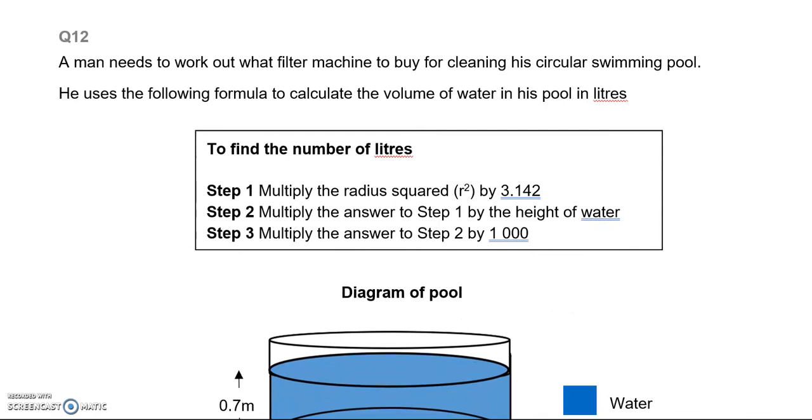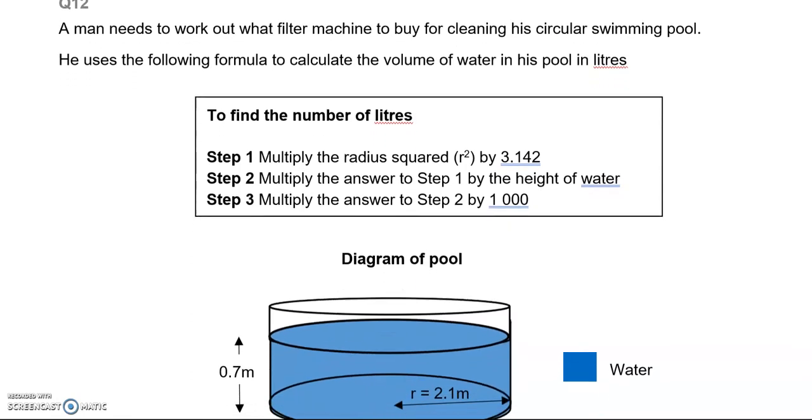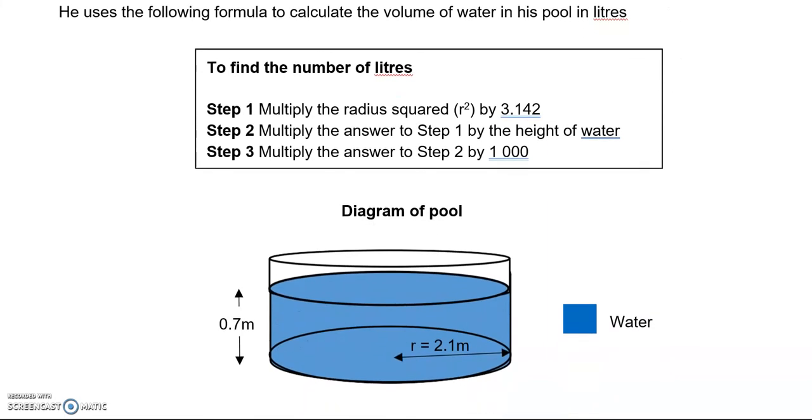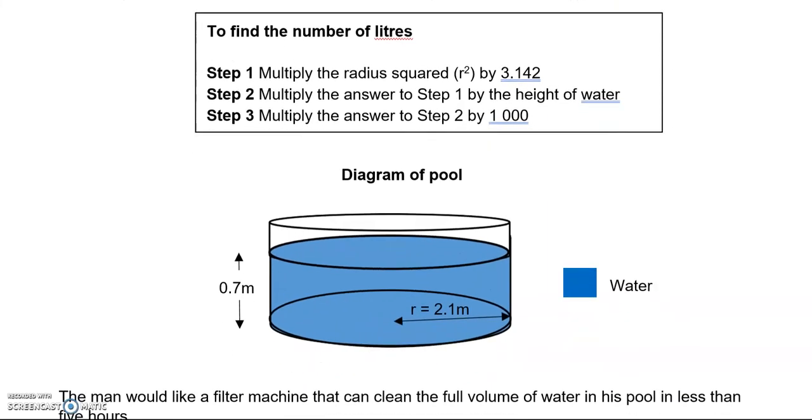Question 12. A man needs to work out what filter machine to buy for cleaning his circular swimming pool. He uses the following formula to calculate the volume of water in his pool in liters. To find the number of liters, we've got step 1: multiply the radius squared by 3.142. Step 2: multiply the answer to step 1 by the height of water. And step 3: multiply the answer to step 2 by 1000. We've got a diagram of the pool and some dimensions.